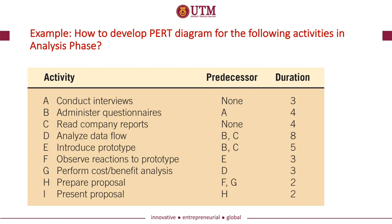Now, how do we develop a PERT diagram given such information as presented in the slide? The table shows the detailed activities planned for the analysis phase of one IS project development. There are nine activities identified as A through I. The predecessor for each activity is also identified in the table. For example, to begin activity B, activity A must be completed. To begin activity D, activities B and C must both be completed.